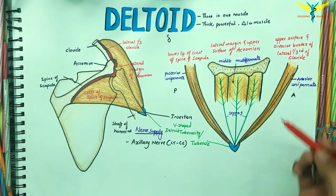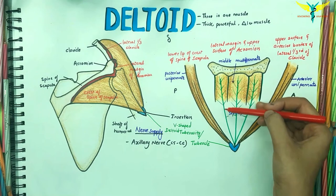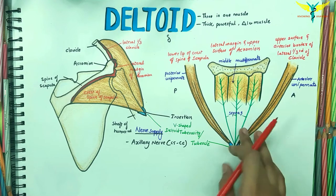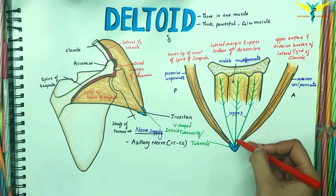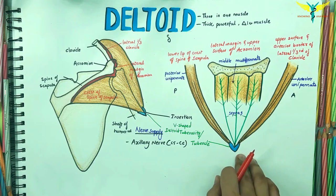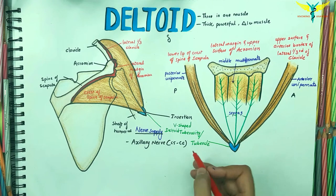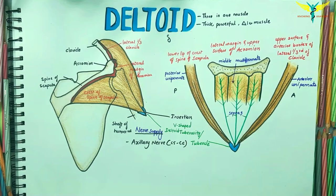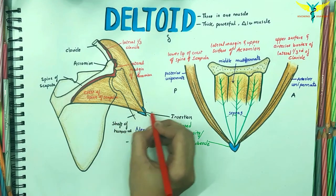Coming to the insertion, the fibers converge inferiorly to form a short thick tendon which is inserted onto a V-shaped deltoid tuberosity or tubercle on the lateral aspect of the mid shaft of the humerus.